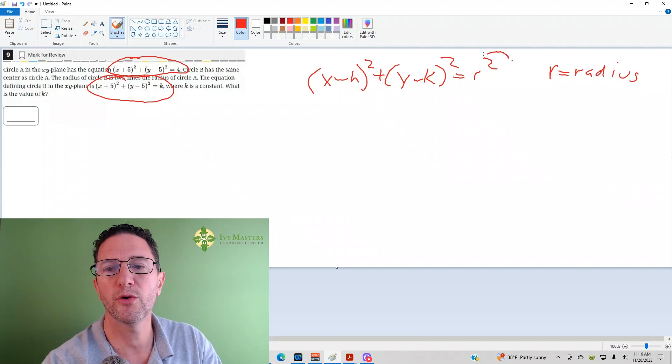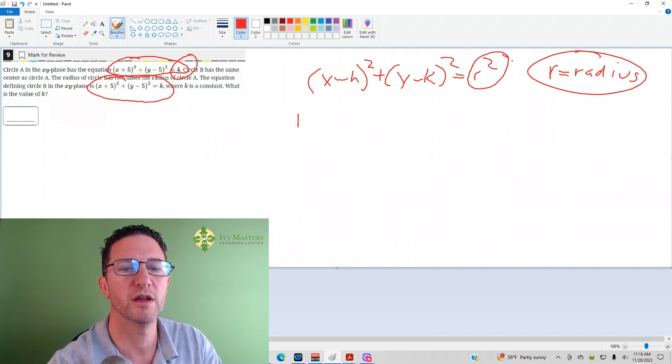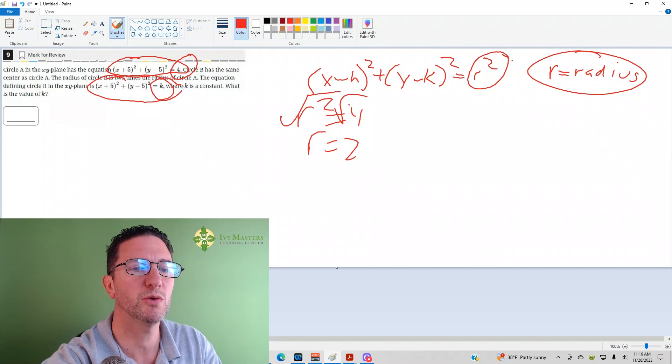In standard form for a circle, r squared is isolated, where r is the radius. So for this one, r squared equals 4, and if you take the square root of both sides, the radius is 2. Which means if this one's double, then the radius equals 4 for this equation.